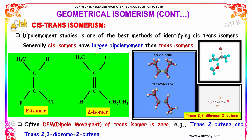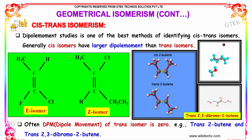Dipole moment studies are one of the best methods of identifying cis-trans isomers. Generally, cis isomers have a larger dipole moment than trans isomers. Often the dipole moment of the trans isomer is zero. Examples include trans-2-butene and trans-2,3-dibromo-2-butene.